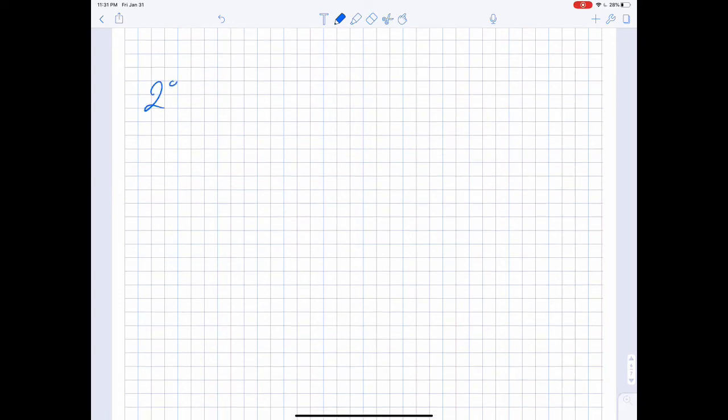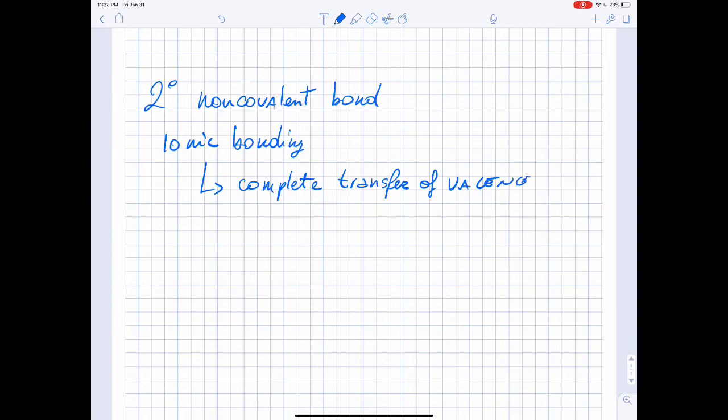Now let's talk about the second type of non-covalent bonds, which are ionic bonds, attraction between charged atoms. Ionic bonding is the complete transfer of valence electrons between two atoms.